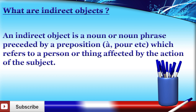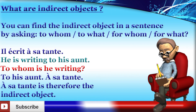An indirect object is a noun or a noun phrase preceded by a preposition such as à or pour, which refers to a person or thing affected by the action of the subject. You can find the indirect object in a sentence by asking: to whom, to what, for whom, or for what. For example, il écrit à sa tante — he is writing to his aunt. To whom is he writing? To his aunt, à sa tante. À sa tante is therefore the indirect object.